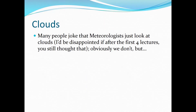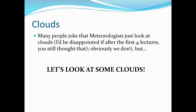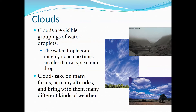So first off, what is a cloud? Most people jokingly say meteorologists just look at clouds. But how does a cloud form? Clouds are basically visible groupings of water droplets. What happens is as warm, moist air rises in the atmosphere, it expands, it cools and condenses.